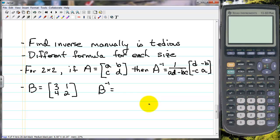Finding inverses, if you have to do it manually, is very tedious. We'll see in a minute that using the graphing calculator it's quite simple. And part of the problem also is that for each size matrix there's a different formula. There are well defined formulas for two by twos and three by threes. Beyond that it starts to get quite complicated.